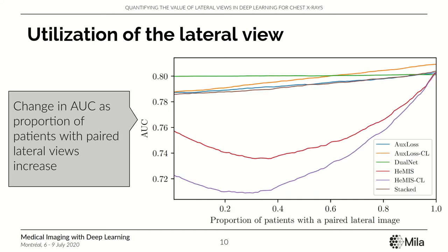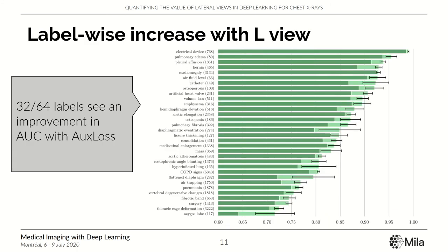We wanted to examine this further, so we varied the proportion of patients having a lateral view in the test set. The left end means all patients had only the PA view, and the right end means all had a paired lateral image. Our model in orange is best at utilizing the lateral view and keeps improving, whereas Dual-Net does not seem to utilize the lateral view at all. We also compared label-wise performance and found that half of the labels show an improvement in AUC with the multi-view model.